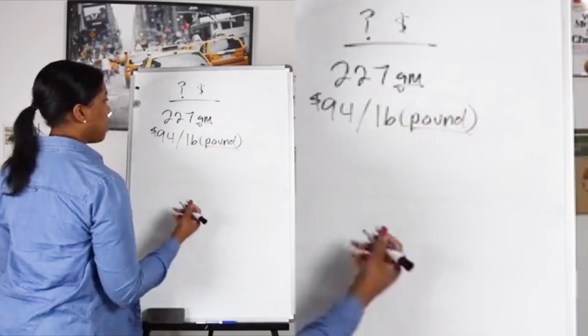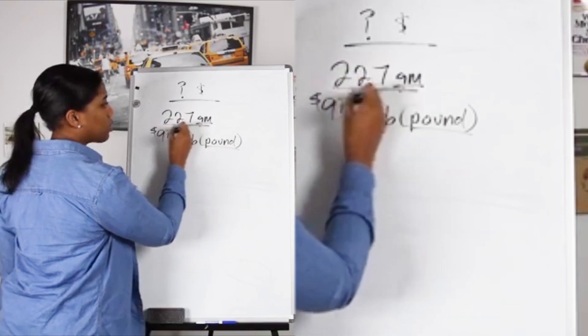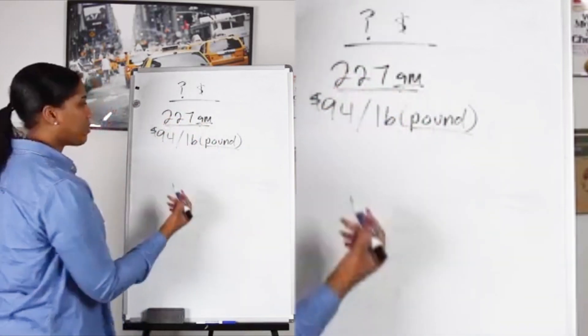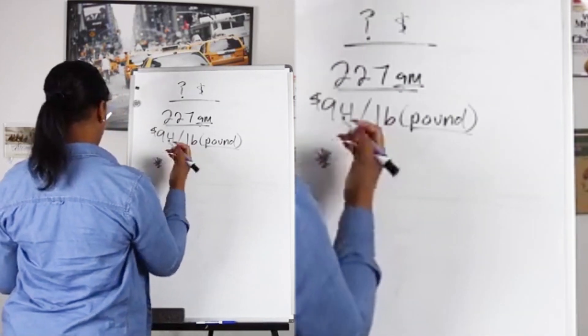So what we already know clearly is that we're going to have to convert grams to pounds, because before we can get to this dollar amount, we've got to figure out: if they've given us 227 grams, how many pounds is 227 grams?